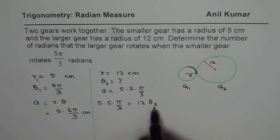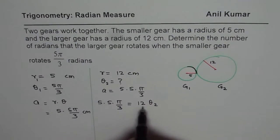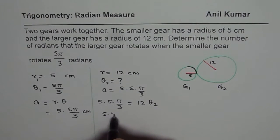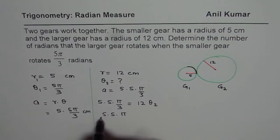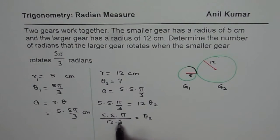And from here we can solve for θ. So when you solve for θ, this is getting divided by 12. So we have 5 times 5 times π divided by 12 times 3, which is the angle θ₂ in radians.